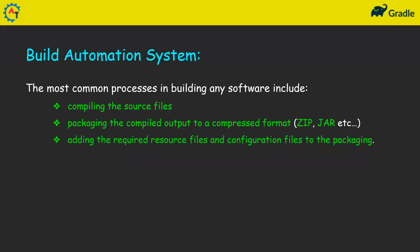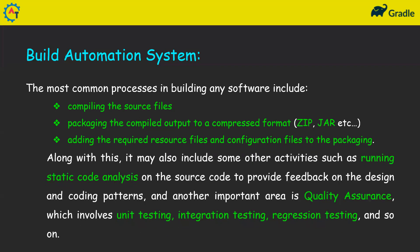You also need to add required resource files and configuration files to the package. Apart from the code you have written, you may need other dependencies, and those files can also be added to your packaging. Additionally, the build may include running static code analysis on the source code, which gives feedback on your code design and patterns. Another important area is quality assurance, which involves unit testing, integration testing, regression testing, and so on — all these come under your build process.